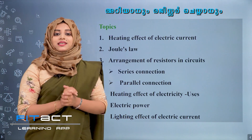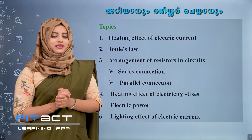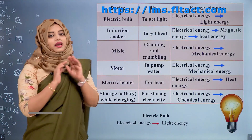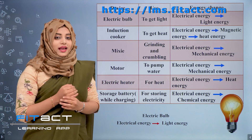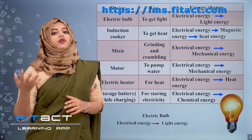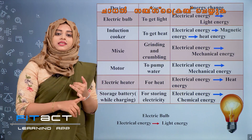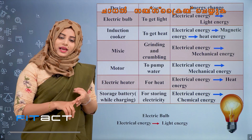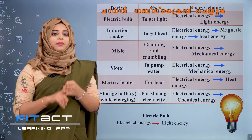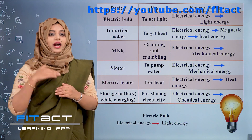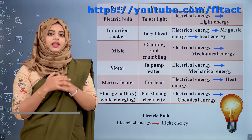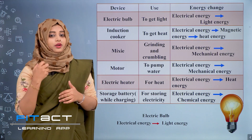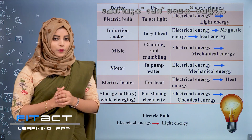Before going to the first topic, let's look at the energy changes that happen in some electrical devices. Electrical energy can be converted into other forms of energy: heat energy, light energy, mechanical energy, and chemical energy — in various electrical appliances we use in our daily life.